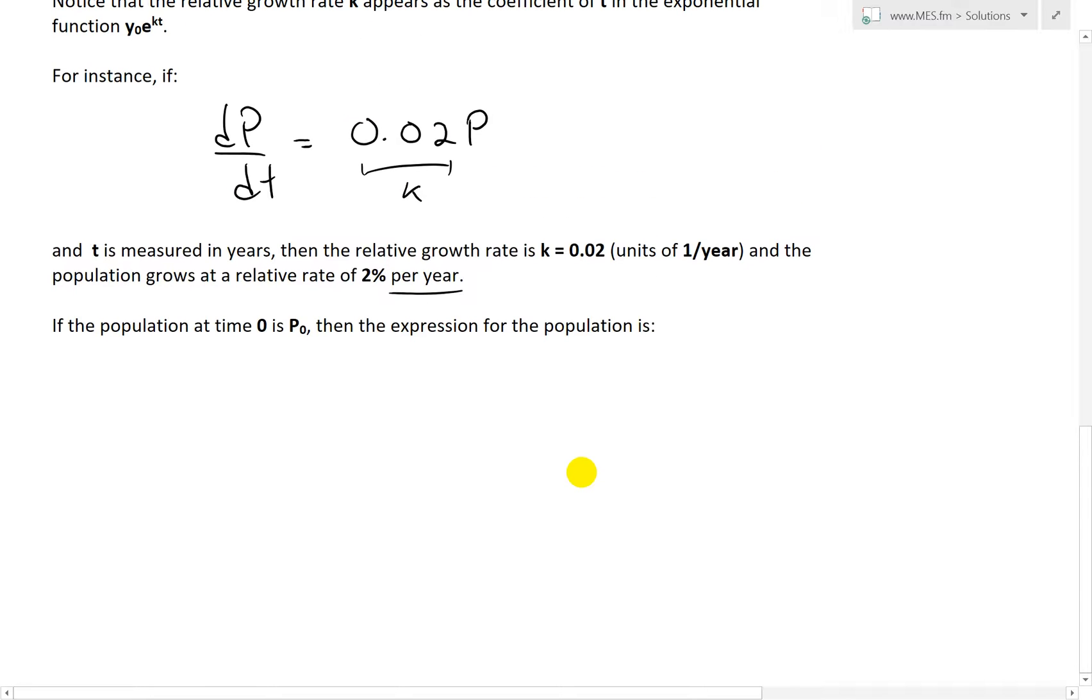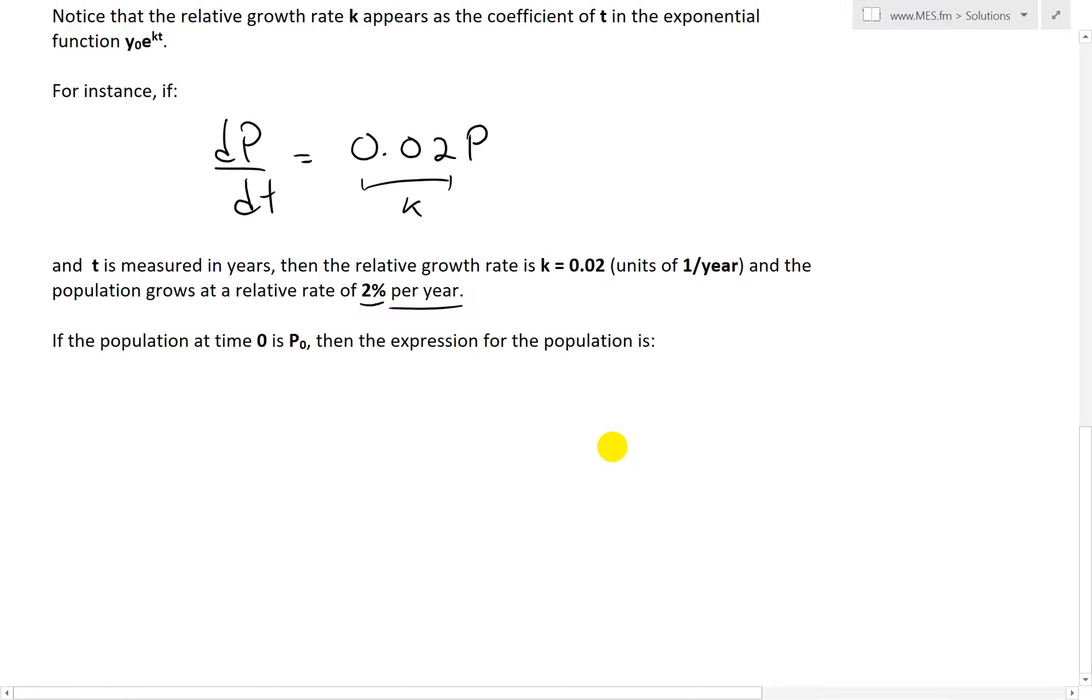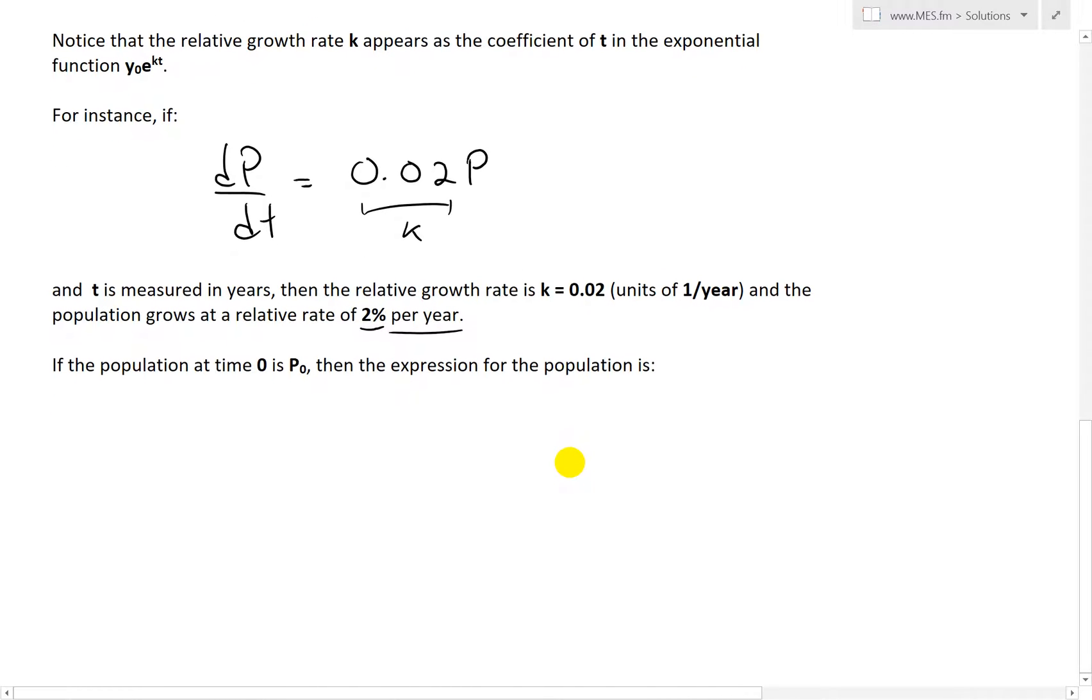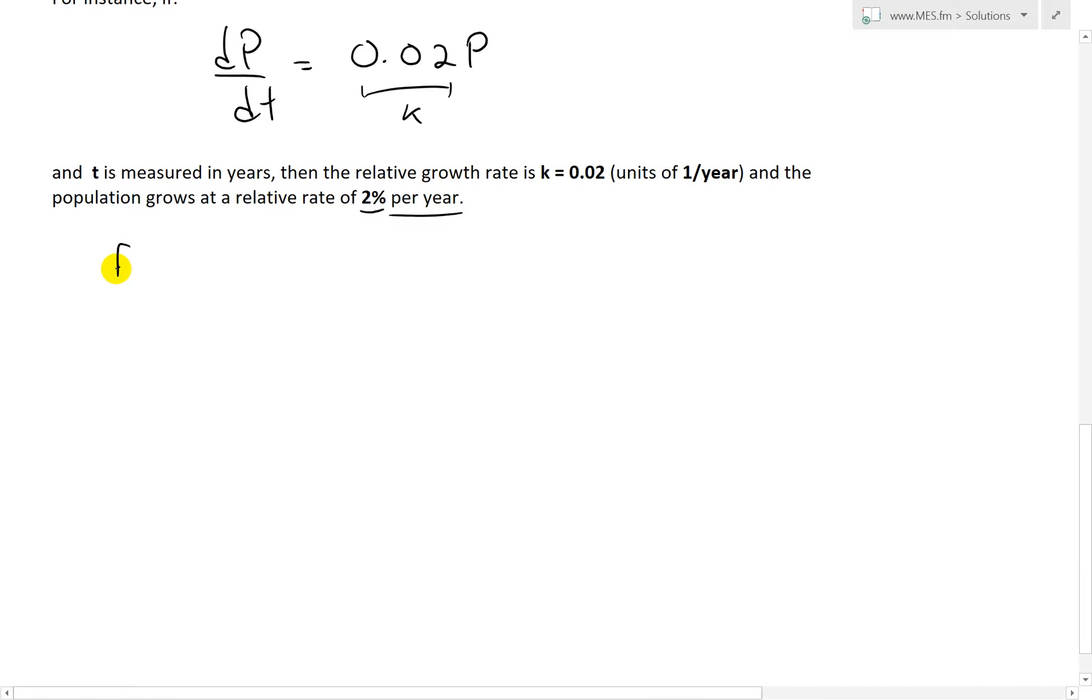The growth rate is 0.02 units of one over a year, and the population grows at a relative rate of 2% per year. So the idea is it's a relative rate, that's why we have this percent, so that it will depend on the size of the population.